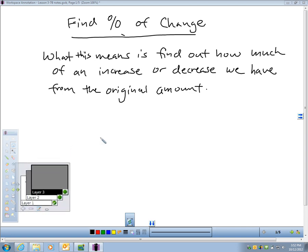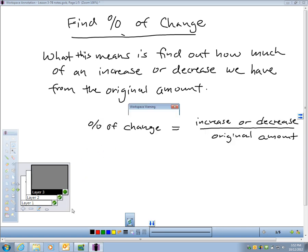We worked on solving percentage questions, but this particular section is finding the percent of change. A percent of change means to find out how much of an increase or decrease in percent we have from the original amount. If you look on page 182, they give you a little percent of change formula, and I'm going to walk through that right now with you. Percent of change is found pretty easily. You take the increase or decrease in change, and we divide that by the original amount, and that will get me the percent of change.